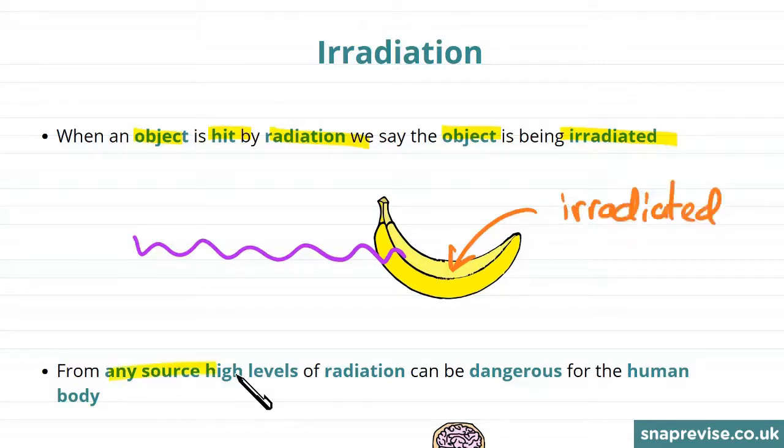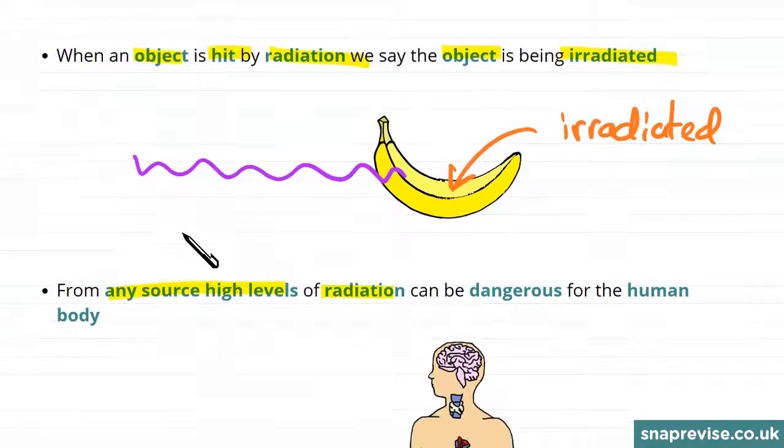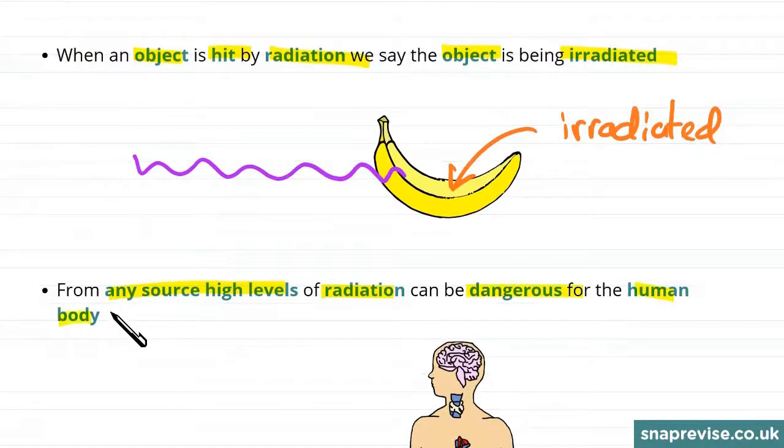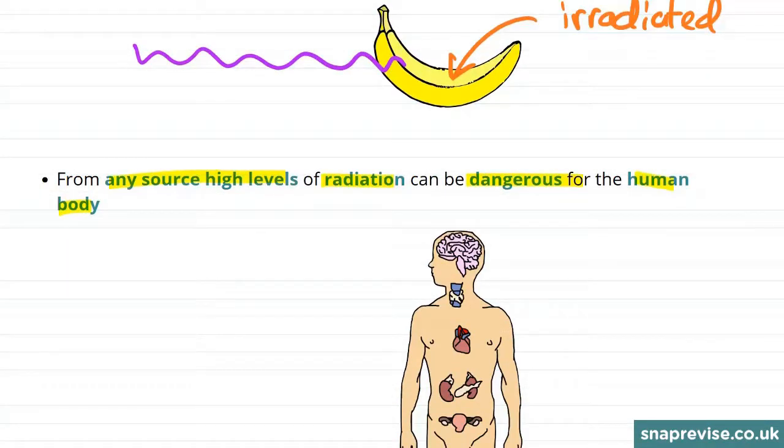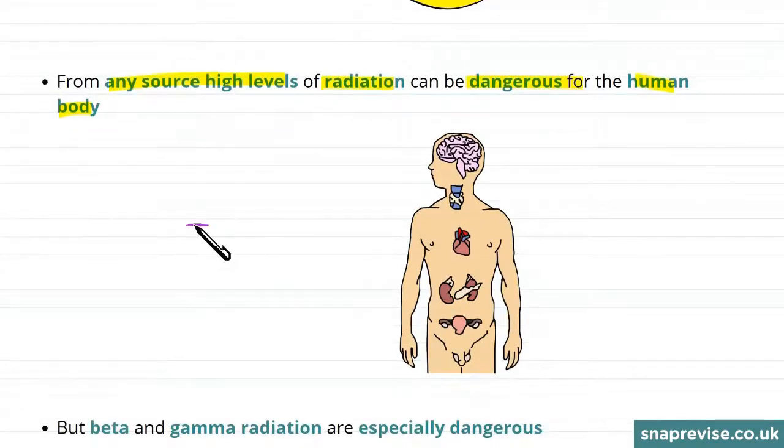Now from any source, high levels of radiation can be dangerous for the human body. So whether it's by alpha particles, beta particles, or gamma rays, when we're hit by radiation it could be dangerous for us.